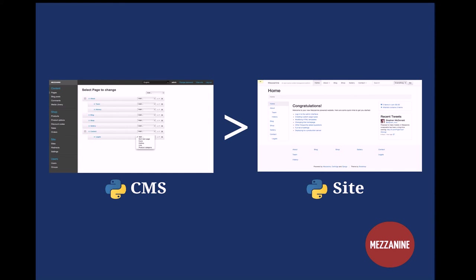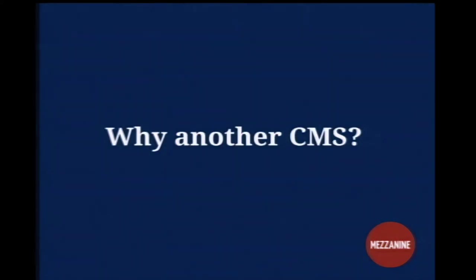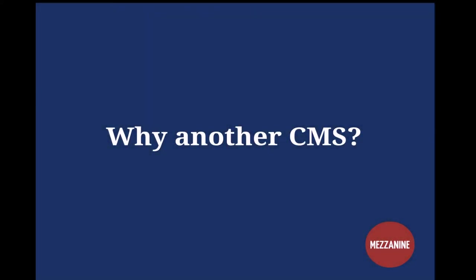So now I'm going to talk about the background leading up to building Mezzanine — why would I go and build another CMS? There's WordPress, there's a gazillion CMSs in the PHP space, there's some in the Django space, and they're really a dime a dozen. If I was to sit down today, I probably wouldn't build another CMS. So to justify doing that, I'll talk a little bit about my CMS story.